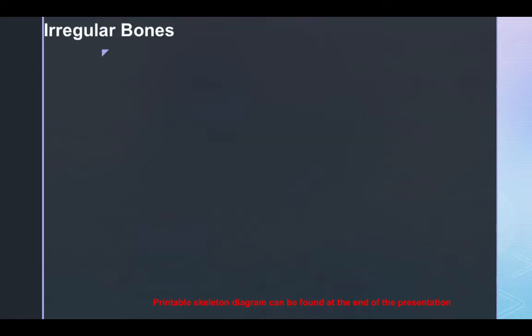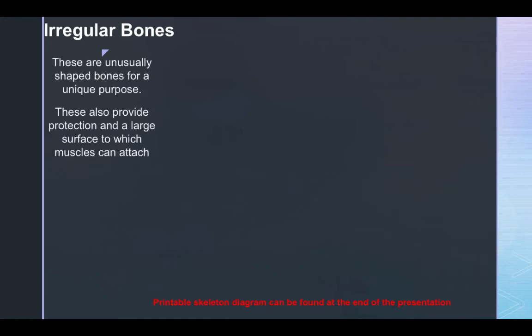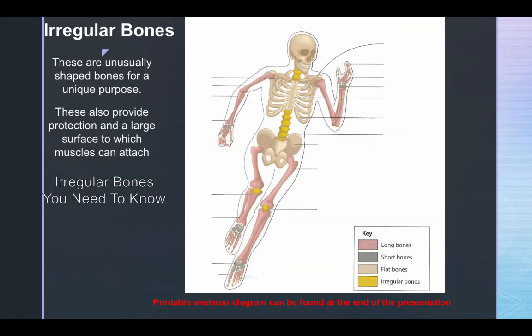Irregular bones are unusual shaped bones for a unique purpose. These also provide protection and a large surface to which muscles can attach. Irregular bones you should know include the vertebral column and the patella.